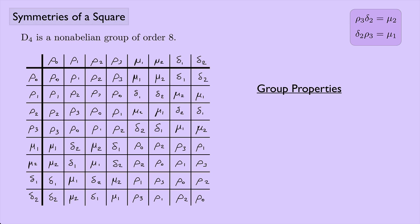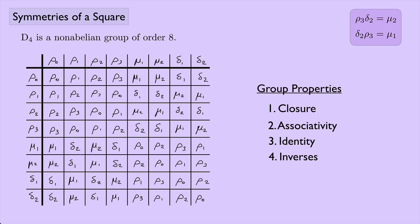So is this a group? Let's check the group properties. Is it closed? Yes, it is. Is it associative? Composition of functions is always associative, so yes. Is there an identity? ρ₀ is the identity — it leaves the square alone. And inverses? ρ₁ and ρ₃ are inverses of each other, ρ₂ is its own inverse, and all of the flips — the μ's and δ's — are their own inverses. So everything has an inverse, which means this is indeed a group. In fact, it is a non-abelian group, meaning the operation is not commutative.